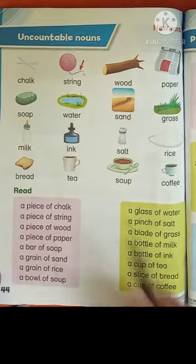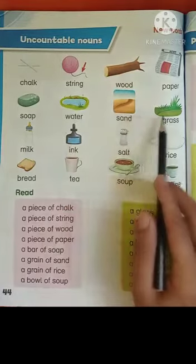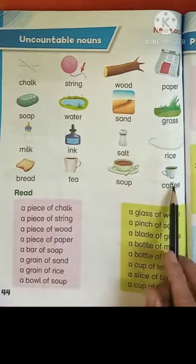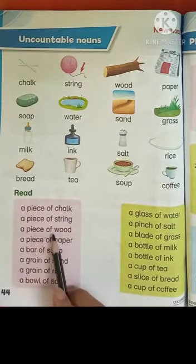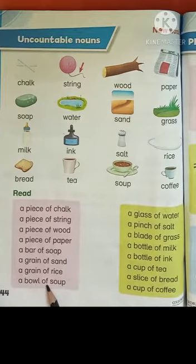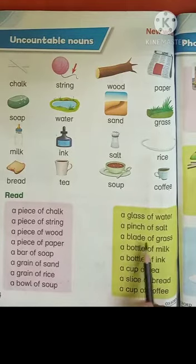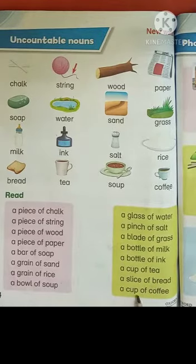Okay students, revise with me once again. Chalk, string, wood, paper, soap, water, sand, grass, milk, ink, salt, rice, bread, tea, soup, coffee. A piece of chalk. A piece of string. A piece of wood. A piece of paper. A bar of soap. A grain of sand. A grain of rice. A bowl of soup. A glass of water, a pinch of salt, a blade of grass, a bottle of milk, a bottle of ink, a cup of tea, a slice of bread, a cup of coffee.